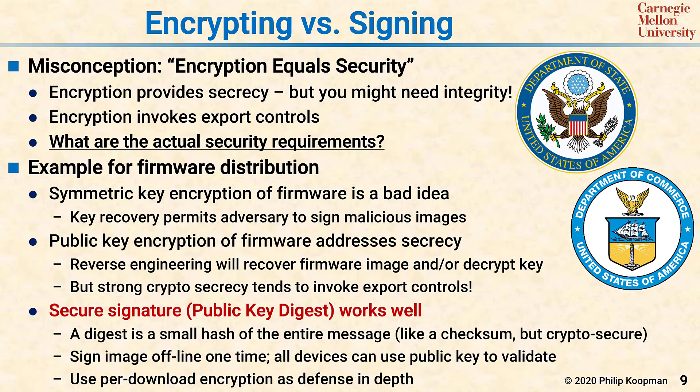You should always consult with a legal expert when interpreting export law. But in general, if you're using a hash approach instead of an encryption approach, you're going to find that your export concerns are minimal or in some cases essentially non-existent, because you're not trying to hide information. Now, you may want to use per-download encryption as a defense-in-depth technique, and if you can clear that past export regulations or you're only using it within the US, that may be fine. But consider that if what you really want is integrity, use an integrity mechanism — a secure digital signature — rather than a secrecy mechanism. It not only saves you computational power, but also makes the regulatory burden much lighter.